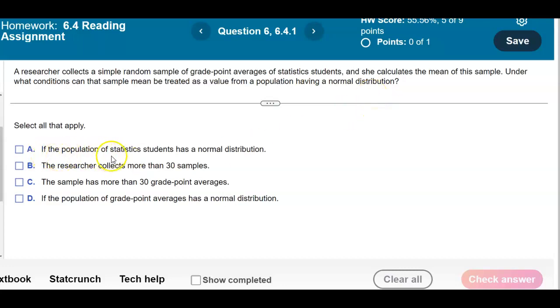If the population of statistics students has a normal distribution, the researcher collects more than 30 samples. The sample has more than 30 grade point averages if the population of grade point averages has a normal distribution.